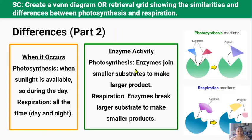Difference four — sunlight and when it occurs: photosynthesis needs light energy from the sun, which is captured by chlorophyll, meaning photosynthesis can only occur during the daytime. Because respiration doesn't need light, it can occur day and night, all the time.